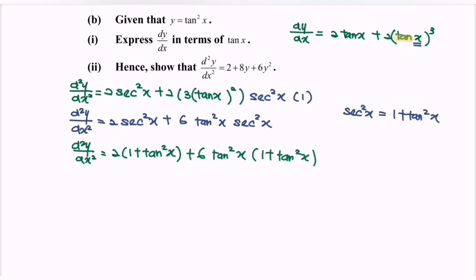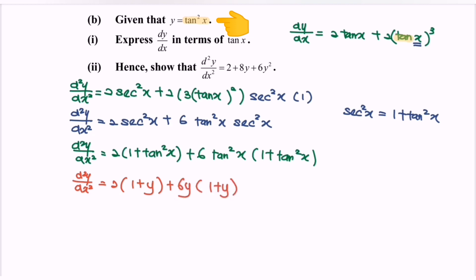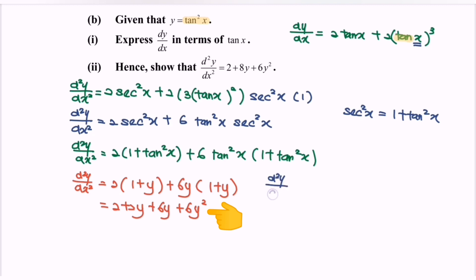Now highlight that y equals tangent squared x, so substitute tangent squared x as y. The second derivative equals 2 multiplied with 1 plus y, plus 6y multiplied with 1 plus y. Expand: 2 plus 2y plus 6y plus 6y squared. So the second derivative equals 2 plus 8y plus 6y squared — the result is shown.